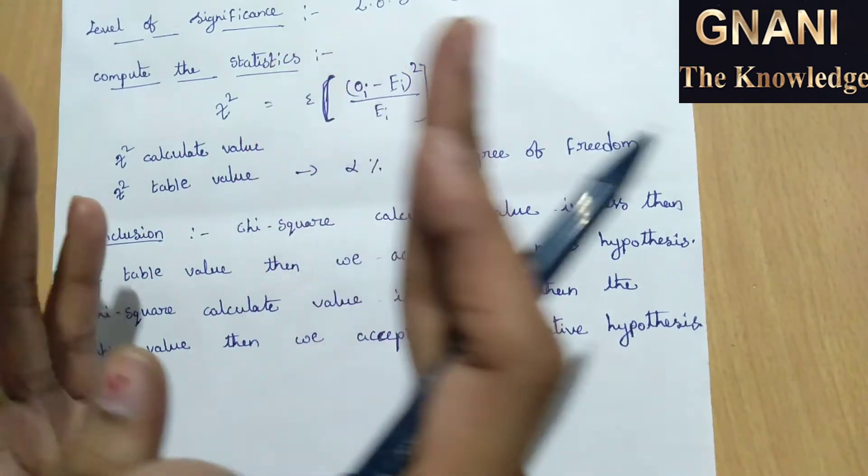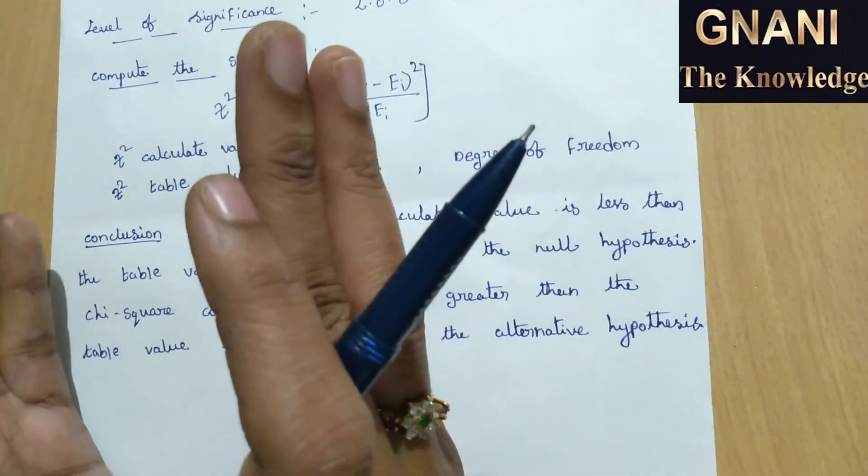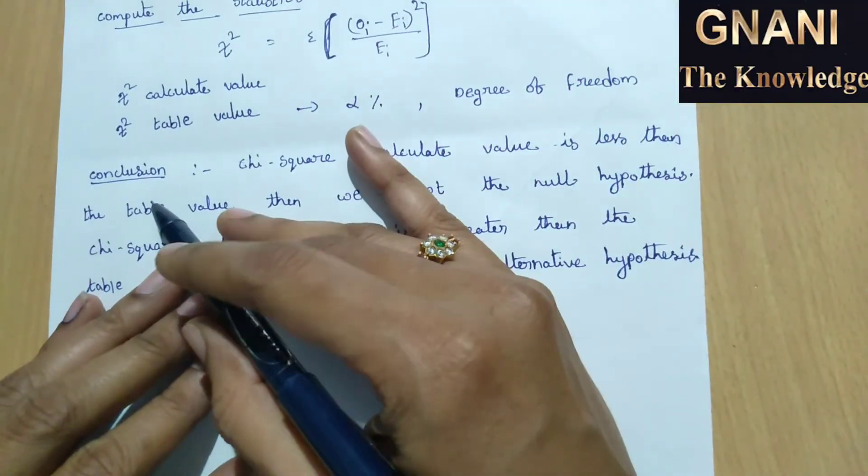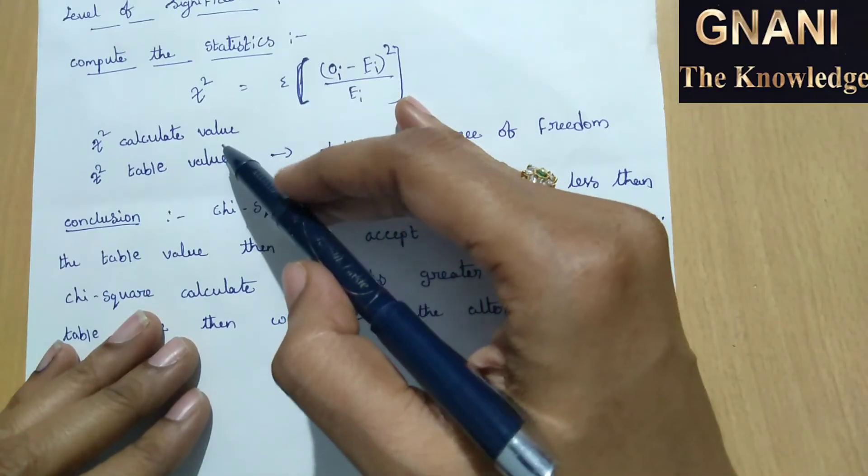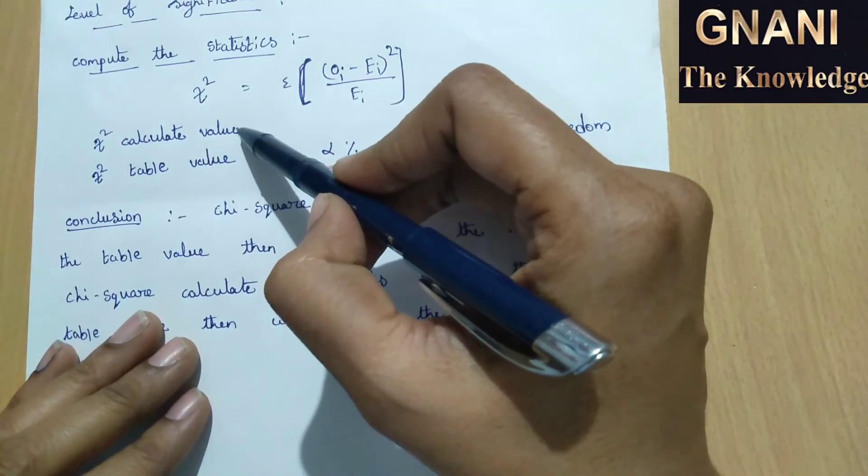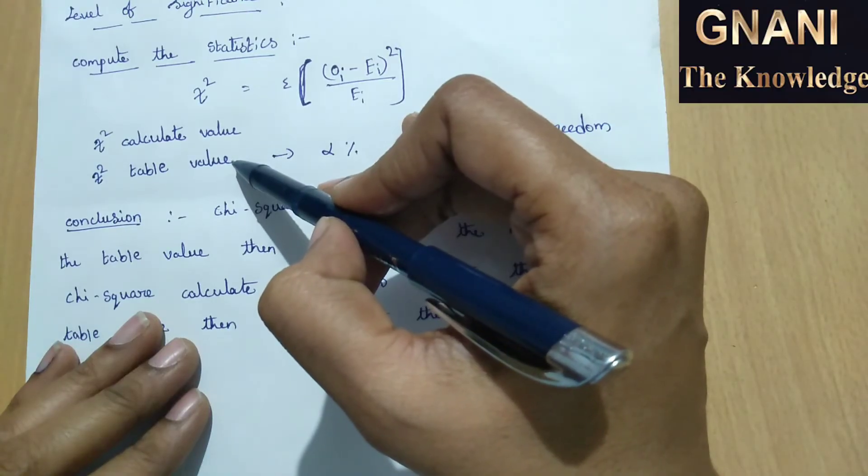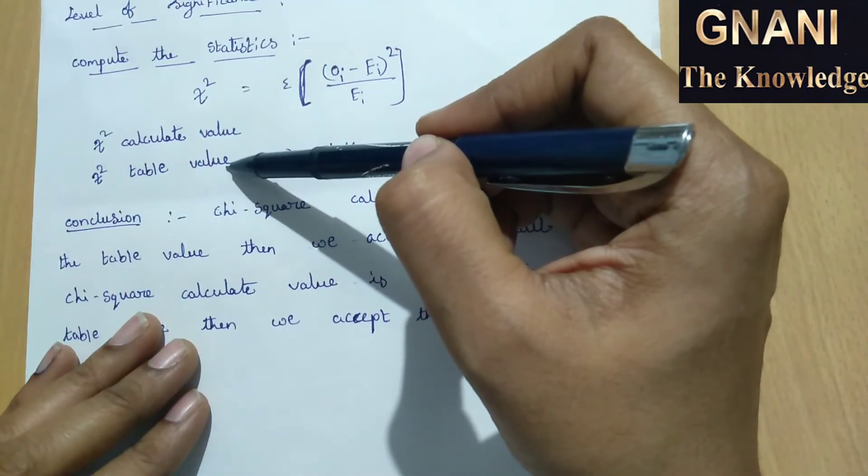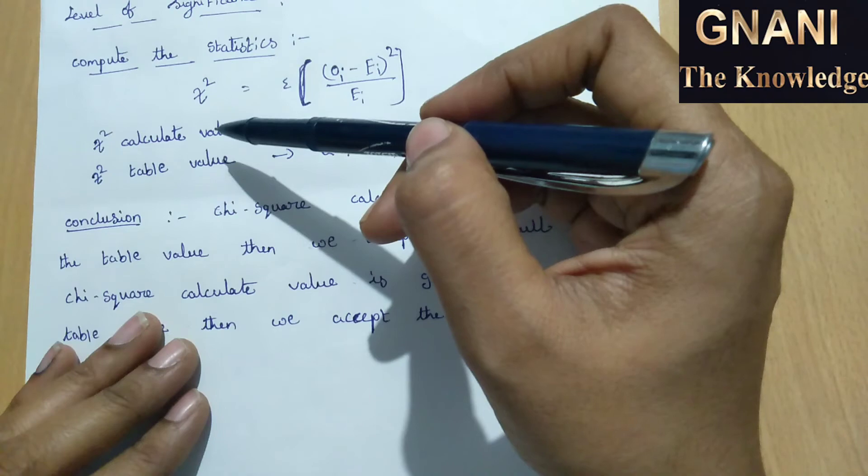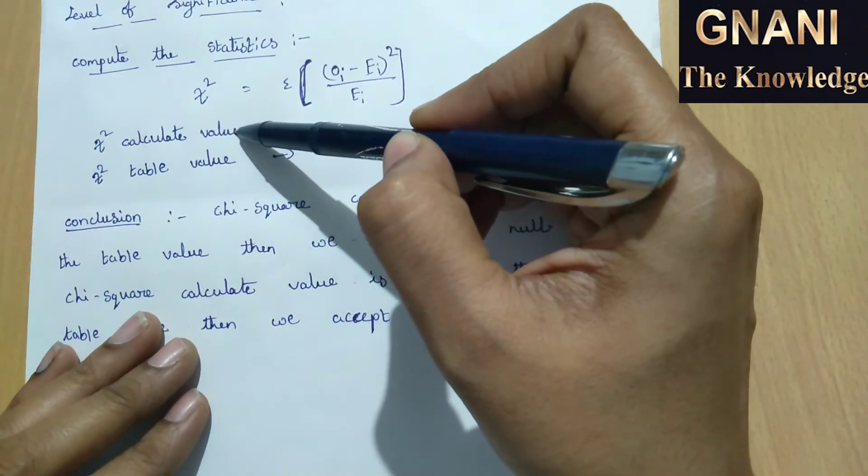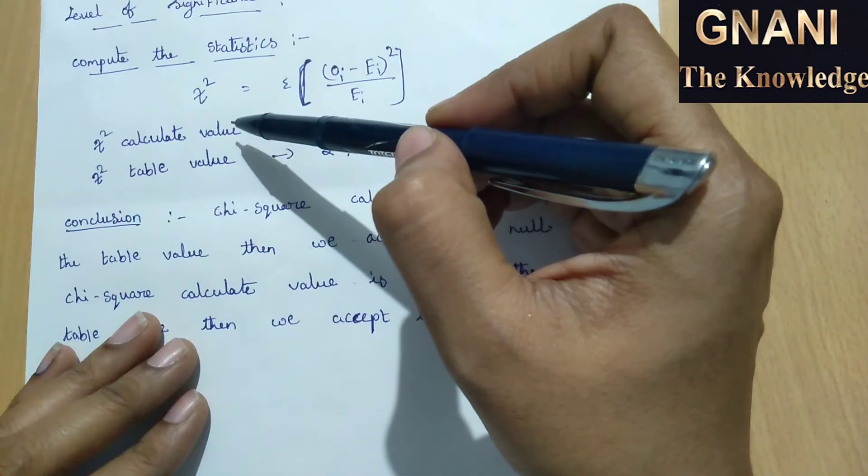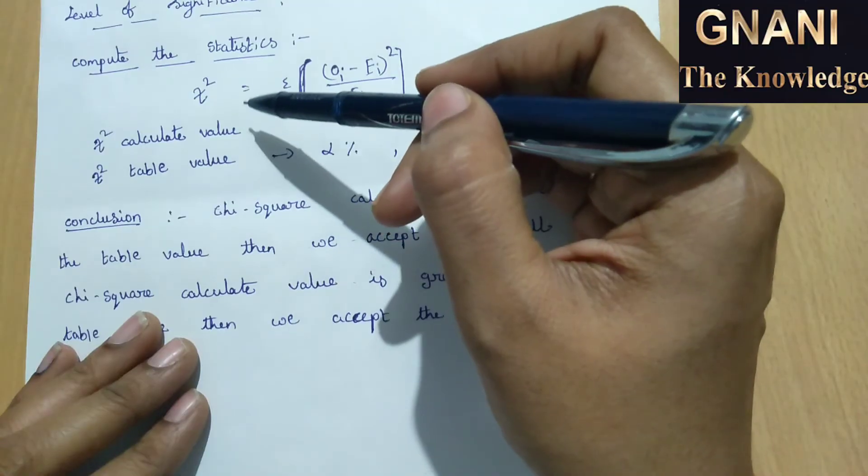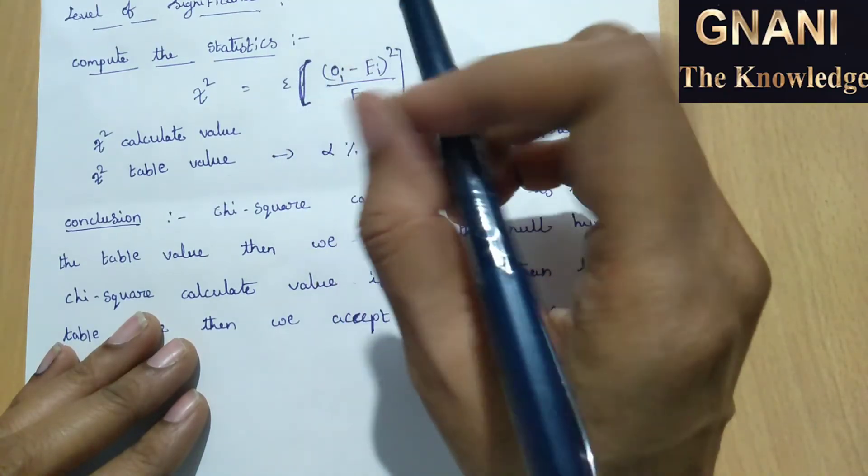In this conclusion part, if the calculate value is less than table value, then we accept null hypothesis at a certain level of significance.